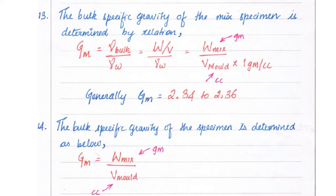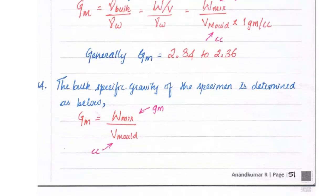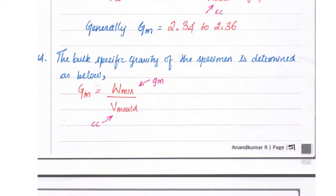Generally, Gm = 2.34 to 2.36. The bulk specific gravity of specimen is determined by W/V, that is weight of mix divided by volume of mold. Weight of mix is denoted in grams and volume of mold in centimeter cube.